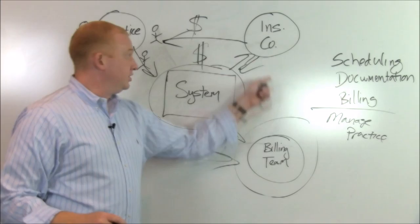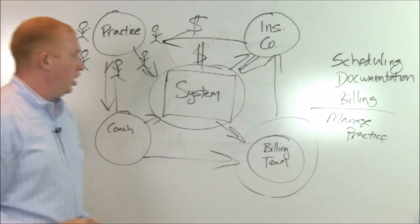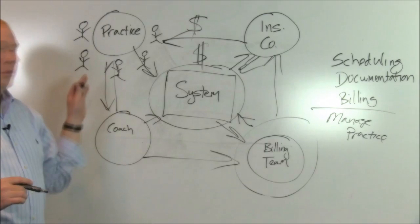When there is a rejection that happens from the insurance company, the billing team will communicate directly with them. Put the information back in the system so both the coach and the practice can see it at the same time. The money only goes directly from the insurance company to the practice. We measure that because the information goes into the system.